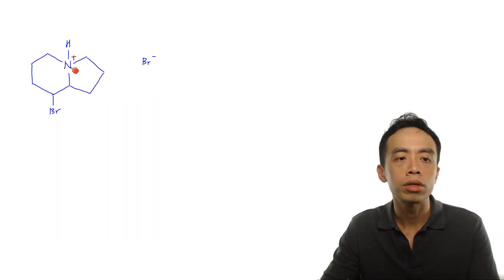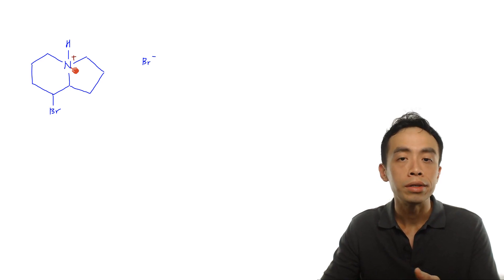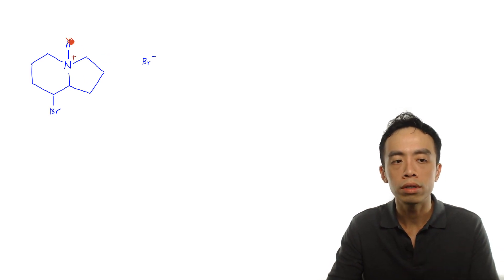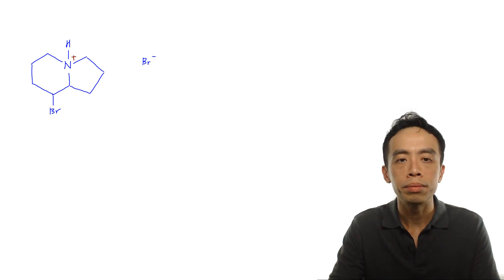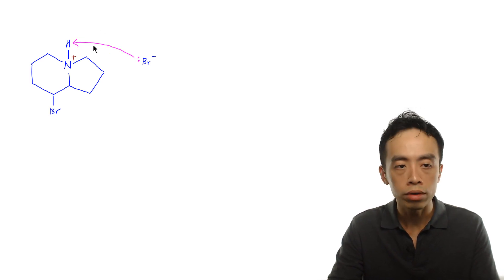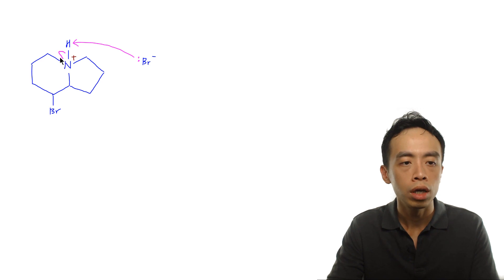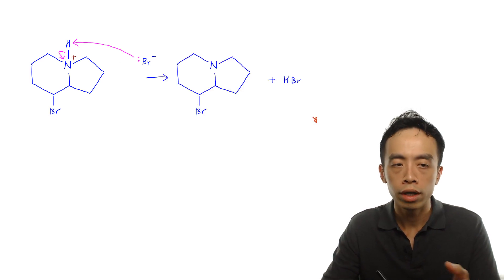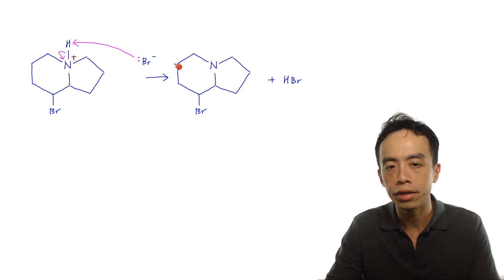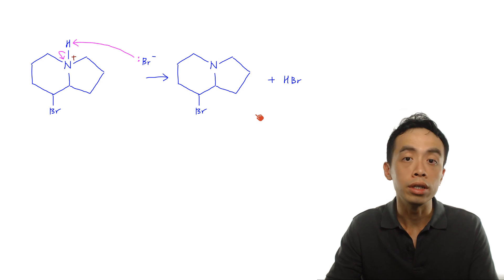Now for the second step: in the product, nitrogen is neutral — it is an amine, not an ammonium salt. So we need to show deprotonation of the intermediate. Br⁻ comes in, uses its lone pair to attack the hydrogen, the H-N bond breaks, both electrons go back to nitrogen. This gives HBr as the byproduct and the required neutral tertiary amine product shown in the question.